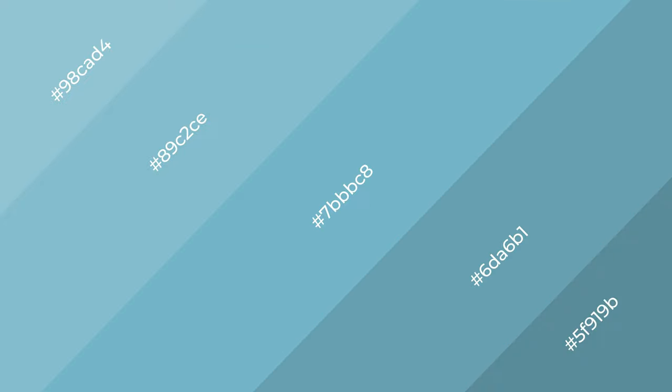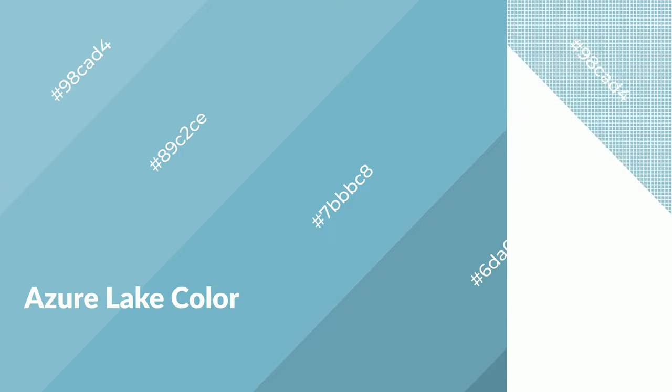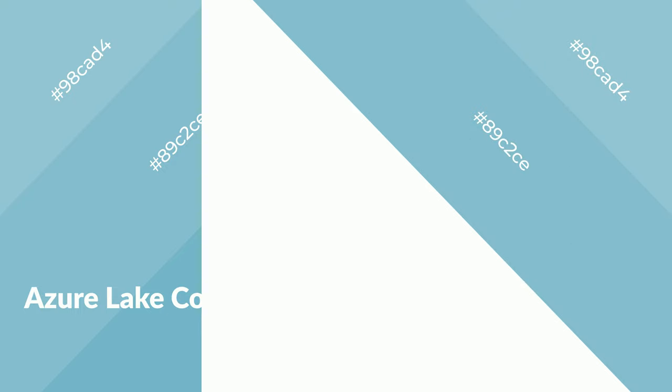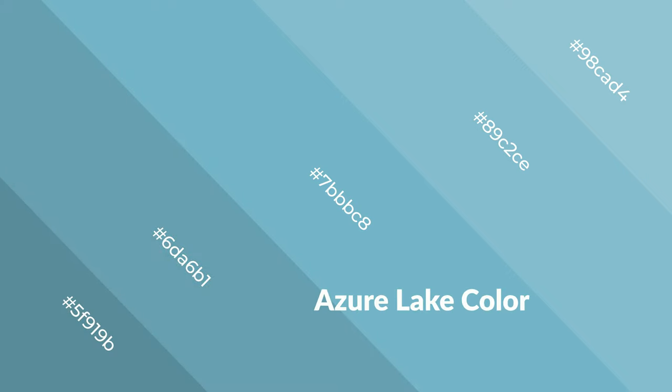Azure lake is a cool color and it emits calming, serene, soothing, refreshing, spacious, unwinding, peaceful, and relaxed emotions. Cool colors are like water, ice, sky, grass, soft, and snow. You can see them used in baby products.